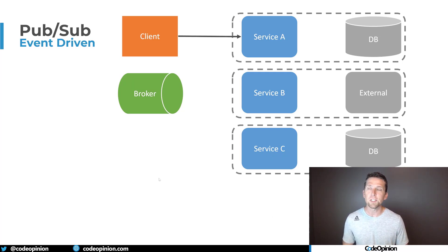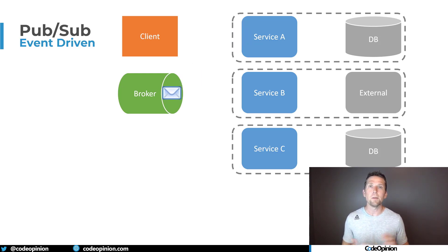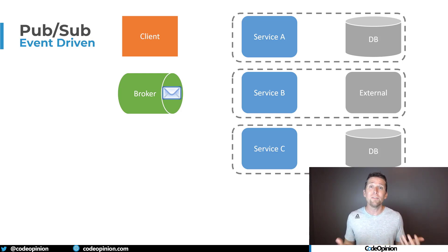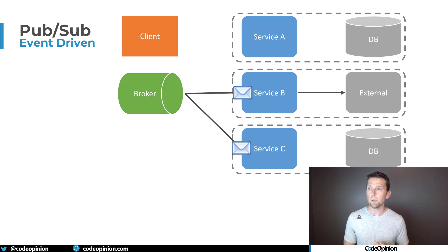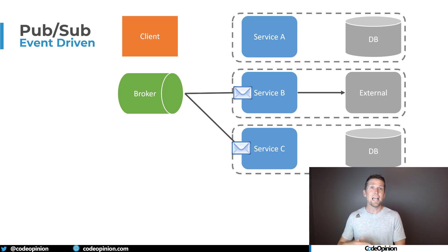With event choreography, when our client makes a request to service A and we do some state change to our database, we then publish an event to our message broker on a specific topic — and at that point, our client request is complete. Service A has no idea if there are any consumers that are going to subscribe or even care about that event. In this case, service B and service C are both subscribed to that topic and will receive and process it. Service B may call its external service; maybe service C has some type of issue and can't process the message — but they're completely independent. That does not affect how service B handles its message, and service A has nothing to do with it. It's done. It's published the message.